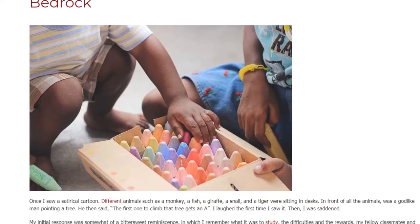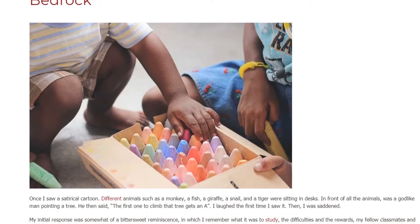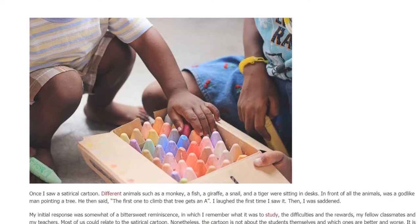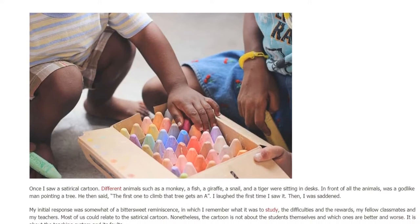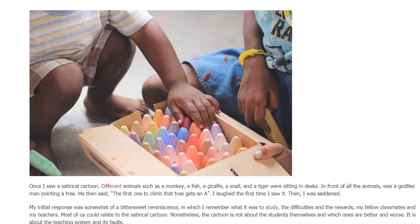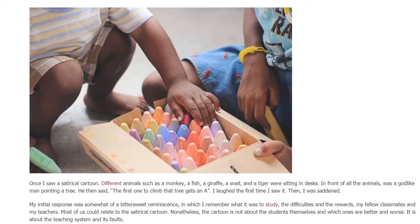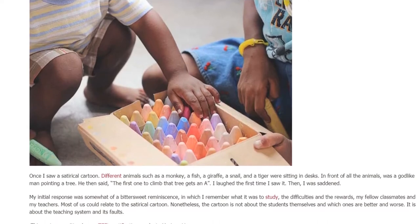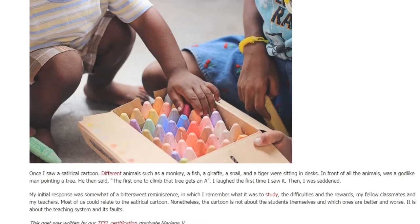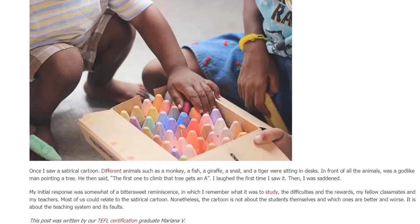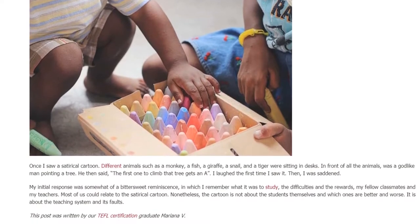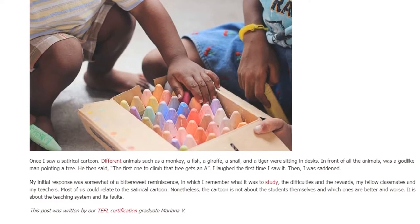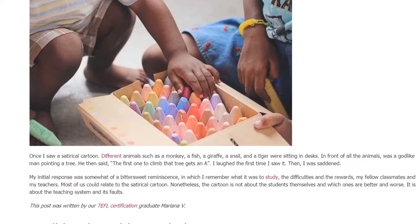Once I saw a satirical cartoon. Different animals — such as a monkey, a fish, a giraffe, a snail, and a tiger — were sitting in desks. In front of all the animals was a god-like man pointing at a tree. He then said: 'The first one to climb that tree gets an A.'